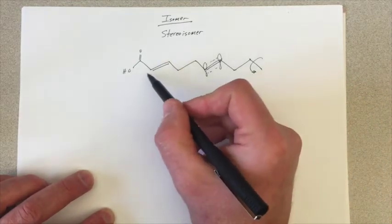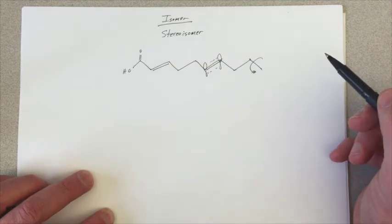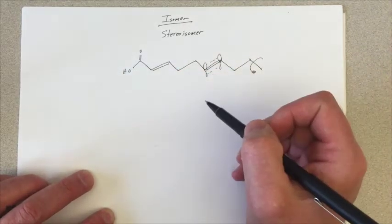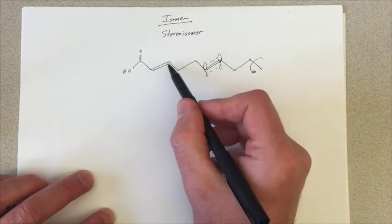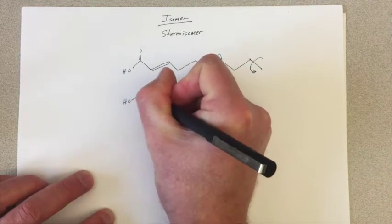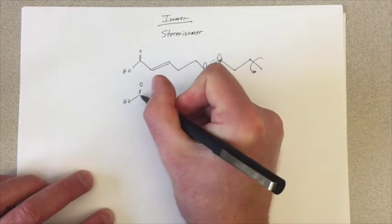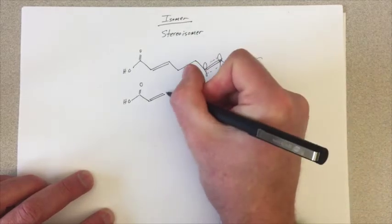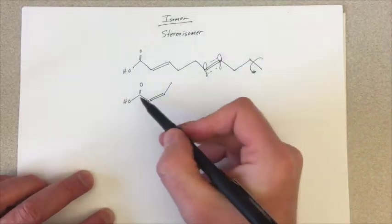Now, when we look at this double bond, we can imagine writing out this fatty acid so that this double bond is oriented in a different way. So let's write carboxylic acid, and here's going to be another version of this double bond.